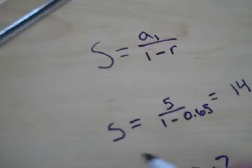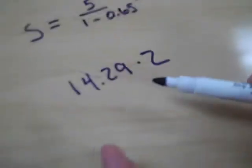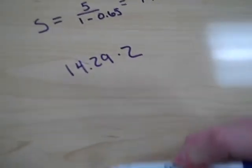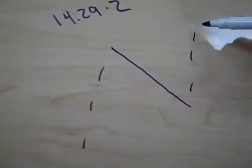So, we know that S equals 14.29. We have to multiply this answer by 2, because the ball bounces up and down each time it hits the ground, and then it comes back up.